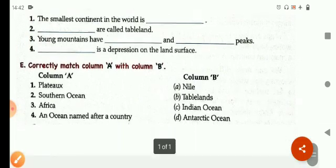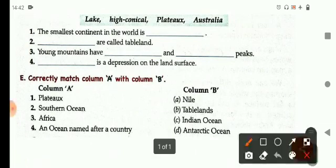Now come to the next one and that's the last exercise of this concept sheet. Match the column. Now you have to match column A with column B. And the first word is, Plateau. Plateau is a table land.